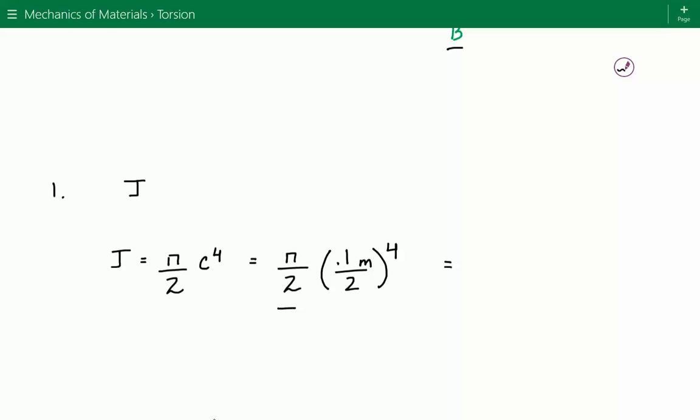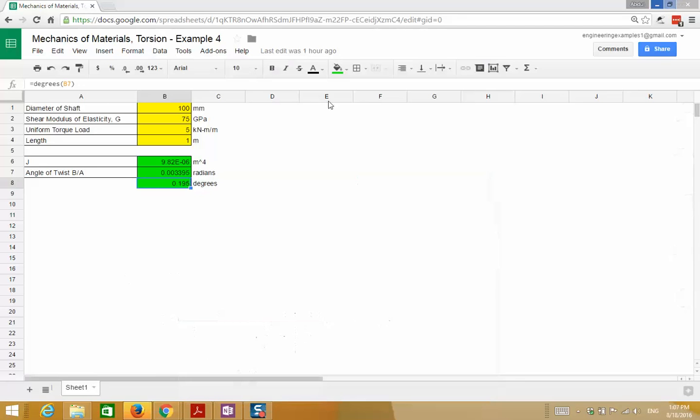The diameter is 100 millimeters, which equals 0.1 meters. We divide by 2 to get the radius, to the fourth power. So J equals 9.82 times 10 to the negative 6.